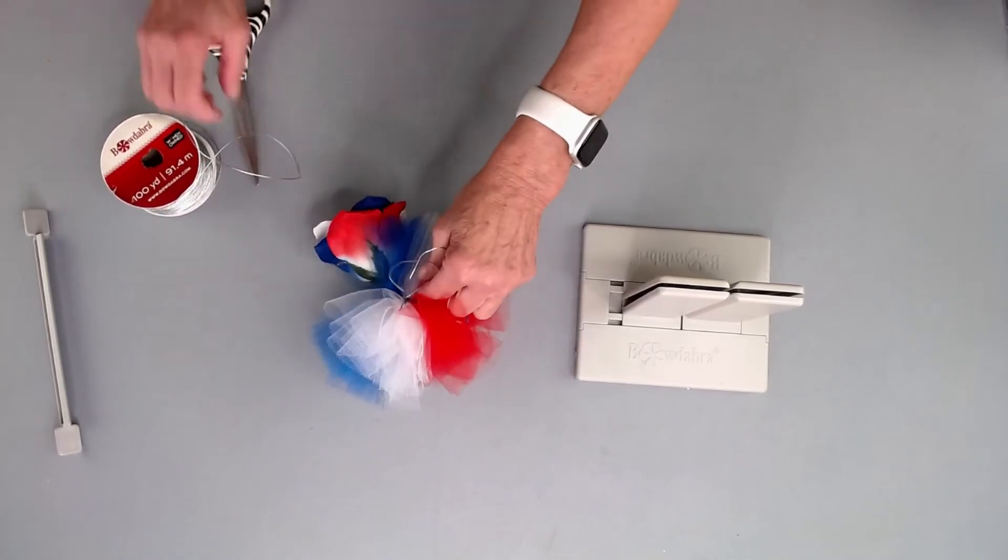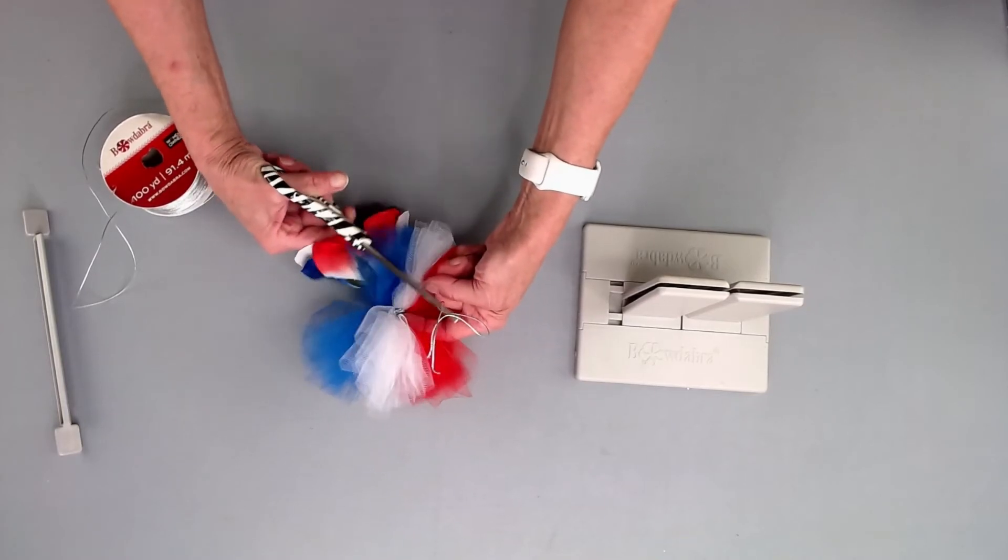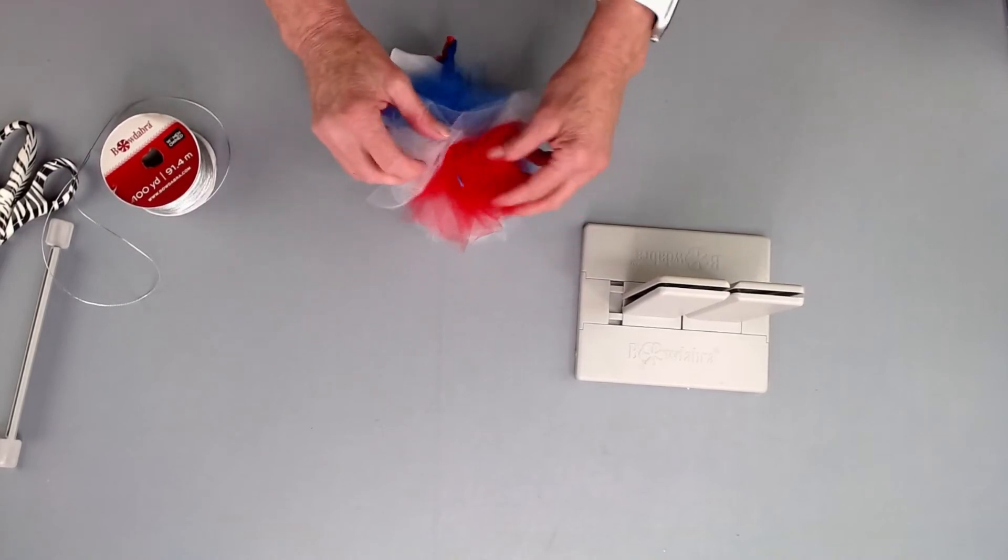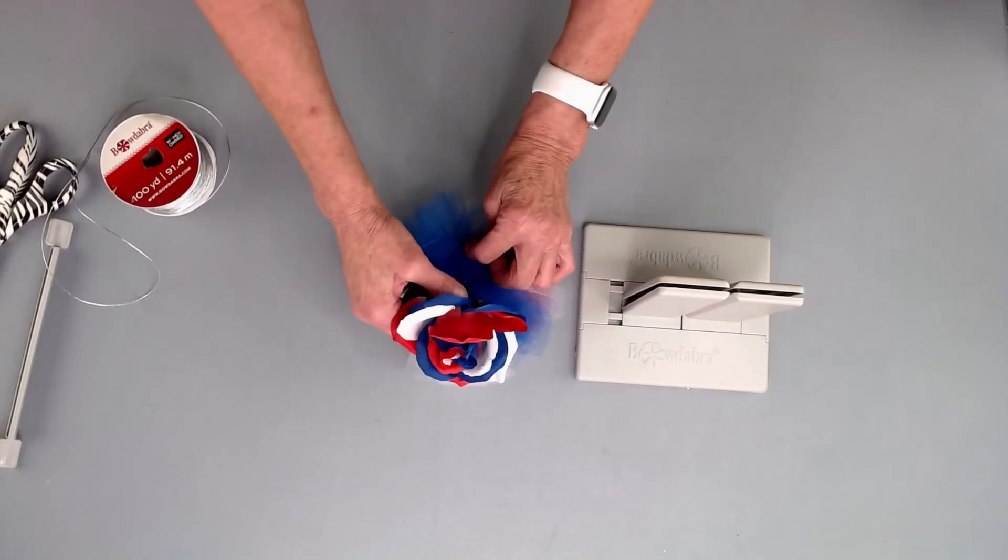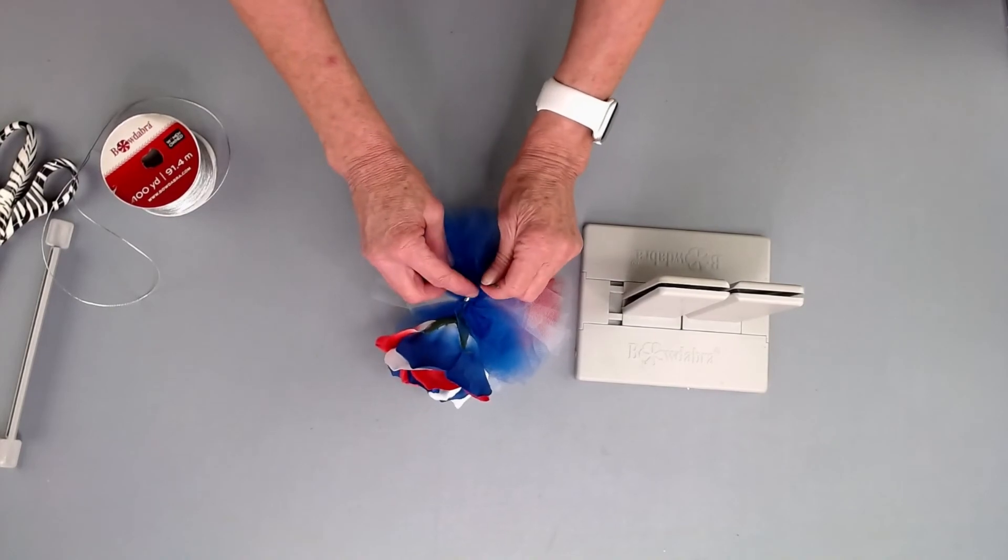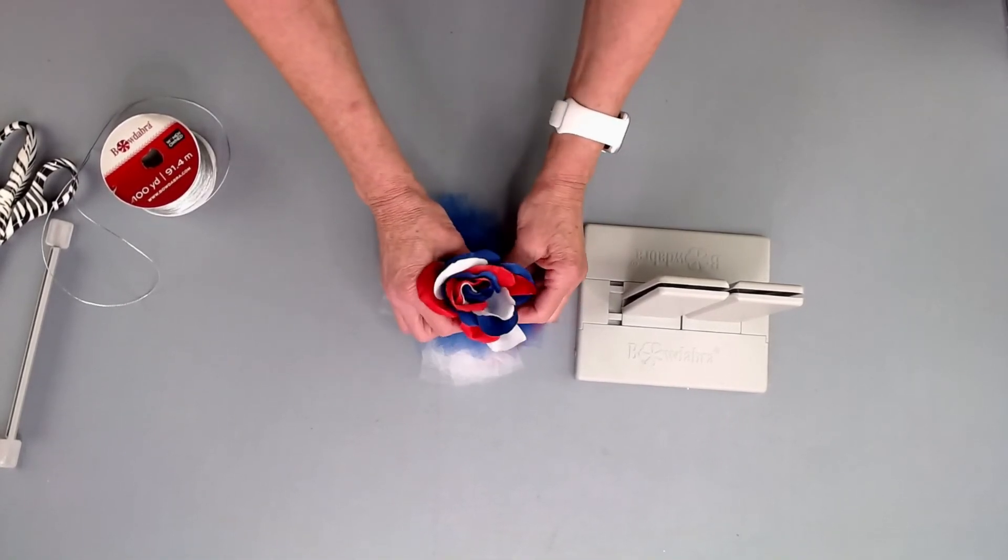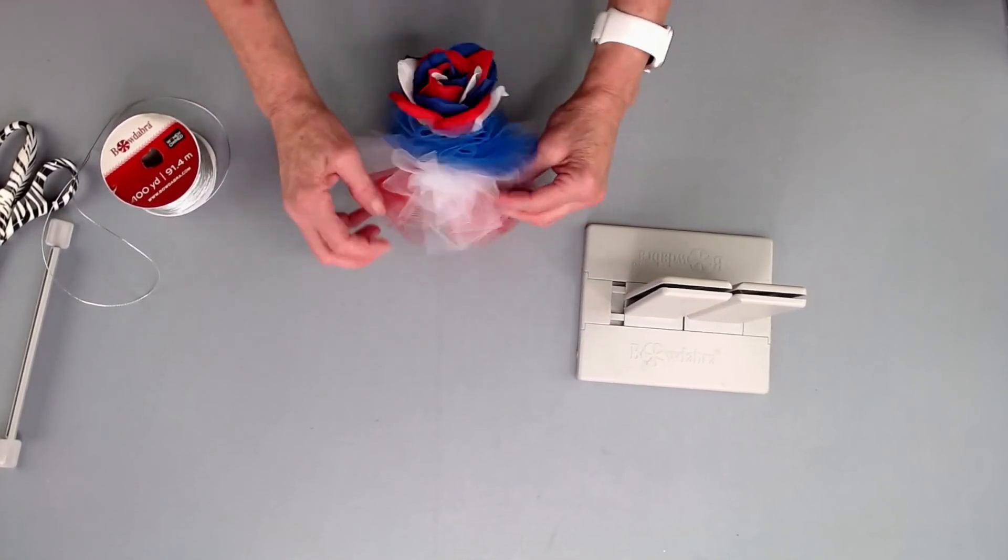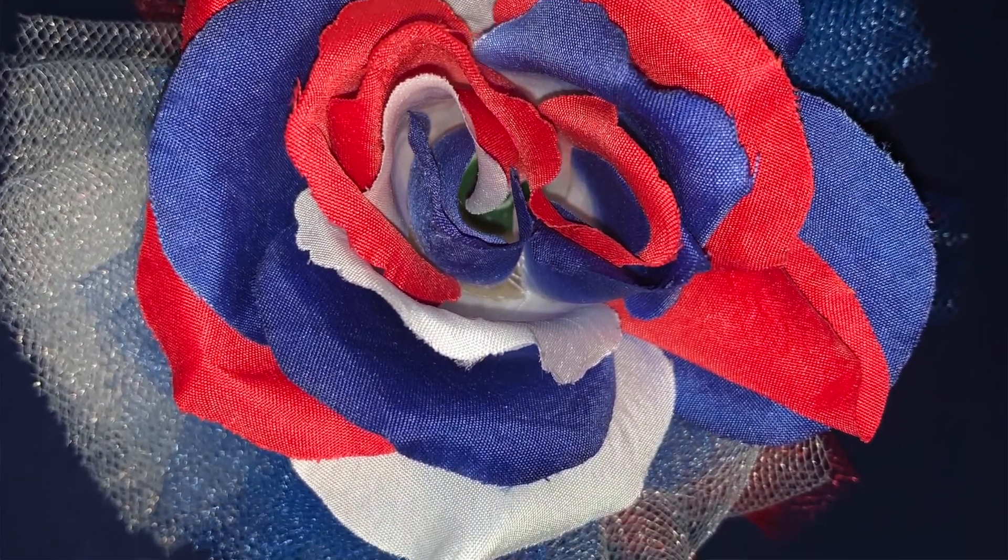And clip the ends here without catching my tulle. Then I'm going to just puff everything out, fluffing it all here. I'm going to pull this through here. I don't have the clippers here, but I would clip the end of this or fold it back over and bring that up there. Just puff everything out and you have this adorable little ponytail holder. So super simple.